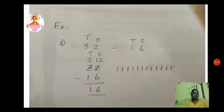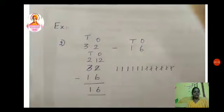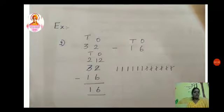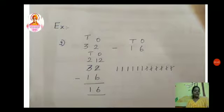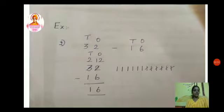The second sum is 32 minus 16. I have written the numbers 32 minus 16. Even though 2 is smaller than 6 — the first number in the ones place is 2 and the second is 6 — we are going to subtract 6 from 2. The first number is smaller and the second number is bigger, but even so we should do the subtraction in this order only. We should subtract the second number from the first number. We should not go in the reverse order. The first number stays first, and from that only we subtract the second number. If it is smaller, what do we do?